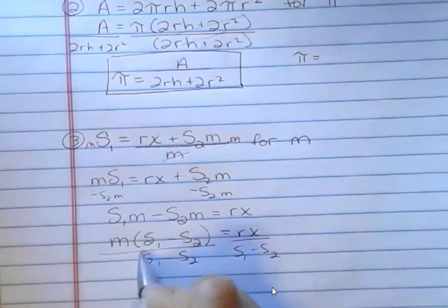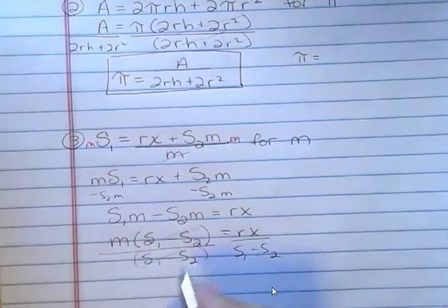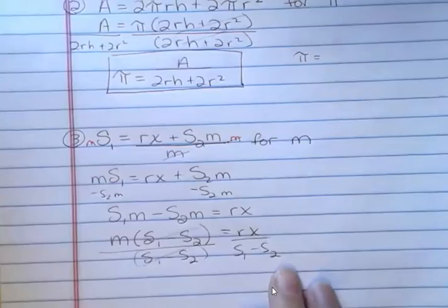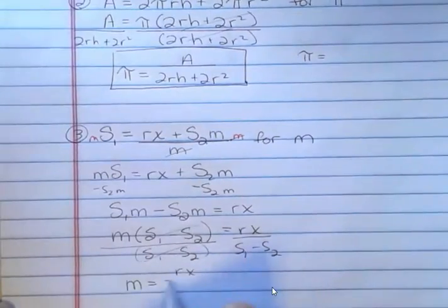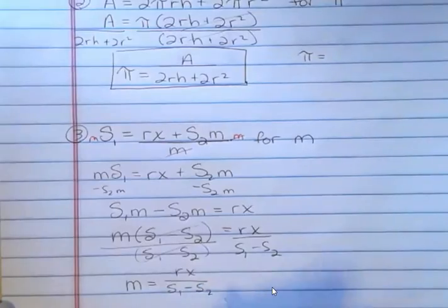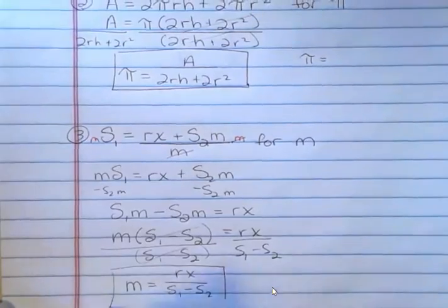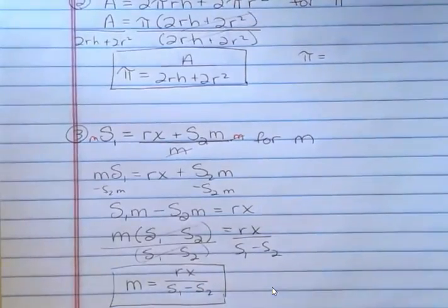And I can think of it as a binomial like that. So that cancels out, leaving, for a final answer, m equals rx over s sub 1 minus s sub 2. And that's my final answer. Kind of tricky, huh? But you'll get the hang of it.